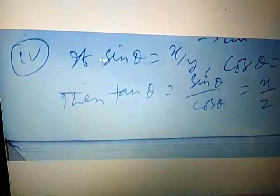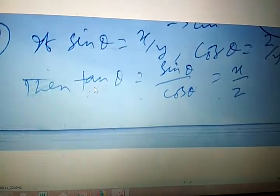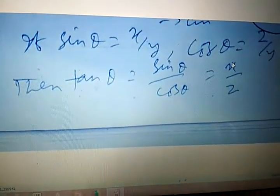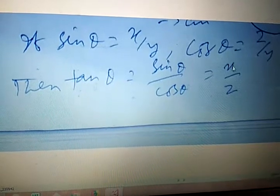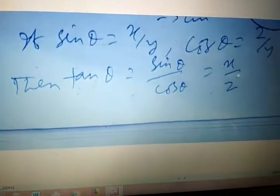If sin theta equals x/y and cos theta equals z/y, then tan theta equals sin theta divided by cos theta, which equals (x/y) divided by (z/y), that is x/z.